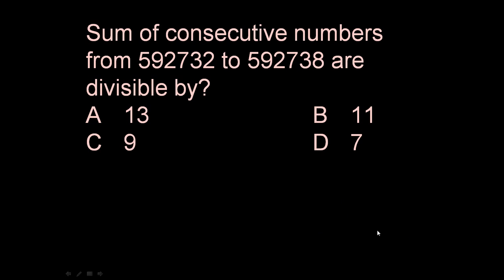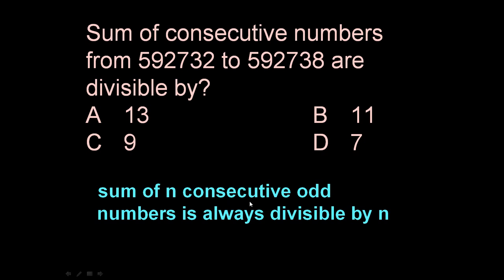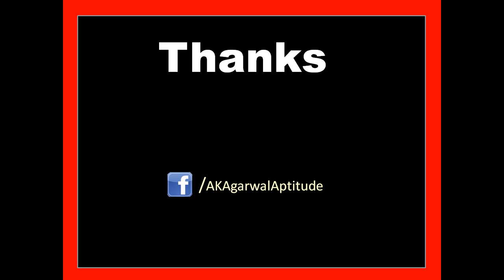In this series, let us solve one more problem using a shortcut technique: the sum of consecutive numbers from 592 to 738 — are they divisible by 13, 11, 9, or 7? Remember the basic rule: the sum of n consecutive odd numbers is always divisible by n. Here we have consecutive numbers from 592 to 738, totaling 7 consecutive numbers. Since 7 is odd, their sum is divisible by 7. The answer is 7. Thank you very much for watching.